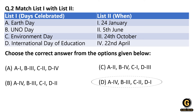By knowing just these two pairs, the correct option is D. Also remember: UN Day is celebrated on 24th October. International Day of Education is celebrated on 24th January, whereas National Day of Education is celebrated on 11th November — on the birth anniversary of our first Education Minister, Maulana Abul Kalam Azad.